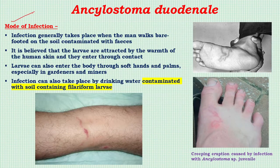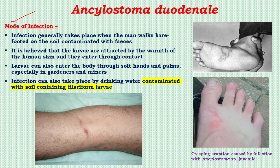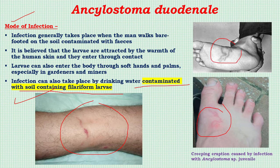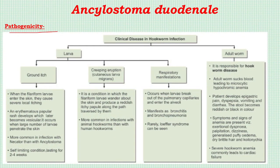Mode of infection: infection takes place when men walk barefooted on soil contaminated with feces. Larvae become attracted by the warmth of the human skin and enter through contact. Larvae can also enter through the soft skin of the hands and palms, especially in miners and gardeners. Infection can also occur through drinking water contaminated with filariform larvae. Images shown depict filariform larvae entering the skin and creeping eruption caused by Ankylostoma species juveniles.